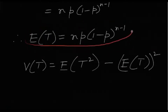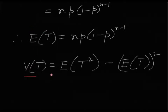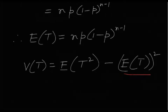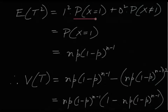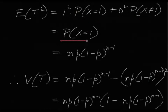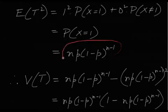For the variance, we use Var(T) = E(T²) − [E(T)]². We need E(T²). From the definition: E(T²) = 1² · P(X=1) + 0² · P(X≠1). Since T only takes values 0 and 1, this again equals P(X=1), which is n·p·(1−p)^(n−1) — the same as E(T).